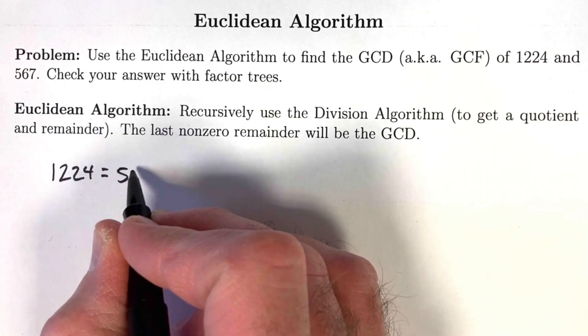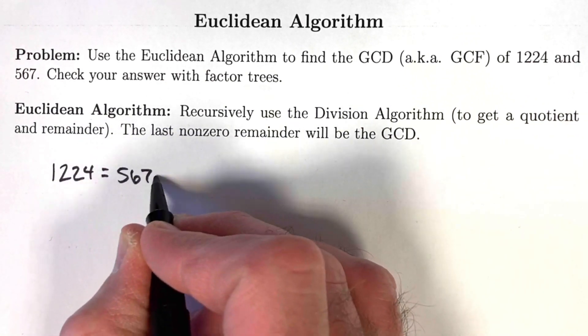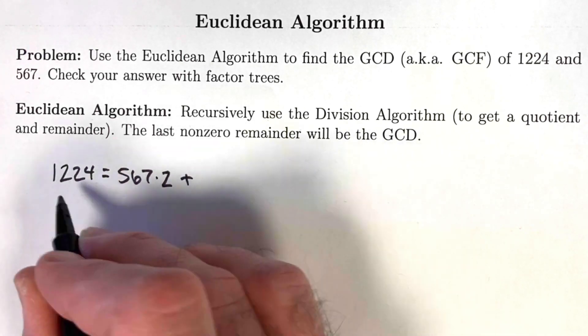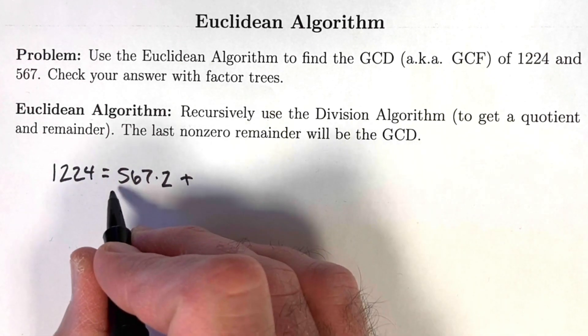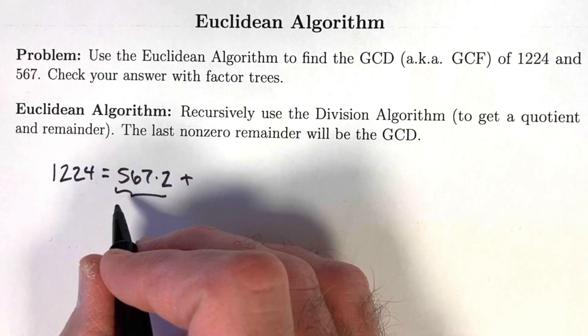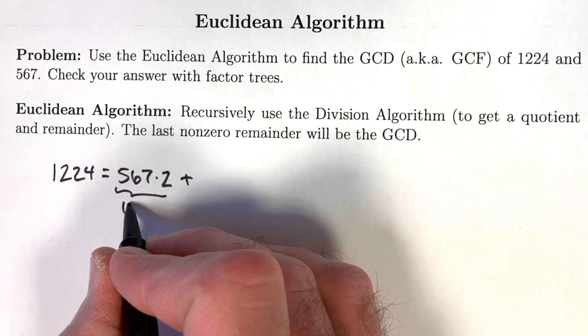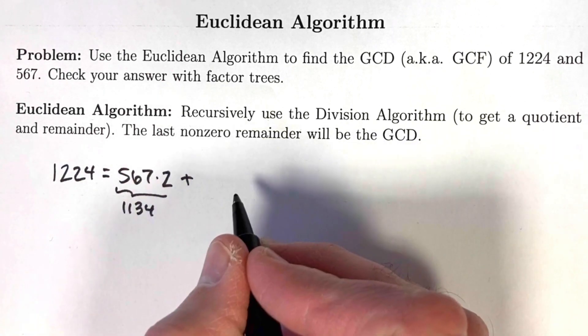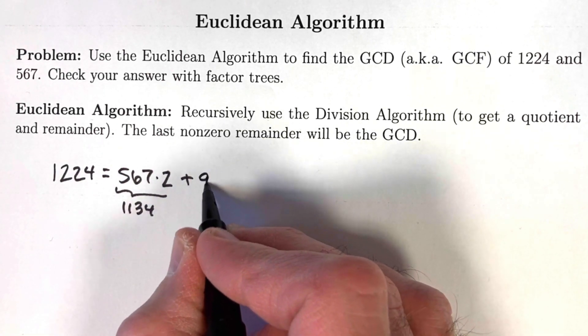567 goes into 1224 twice. The quotient is two. What is the remainder that we need to add to this to get 1224? 567 times two is 1134. We need to add 90 to that to get 1224. 90 is the remainder.